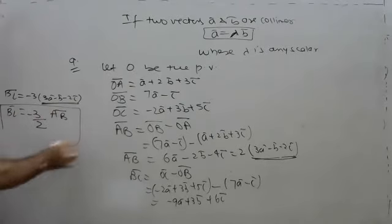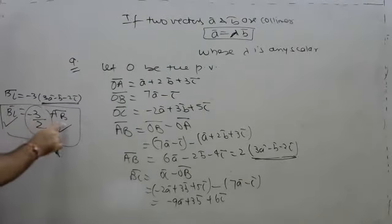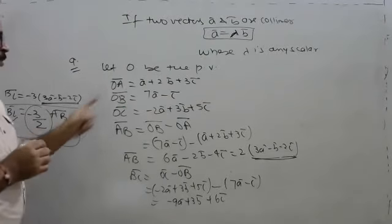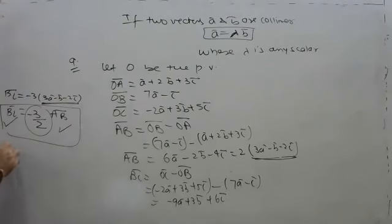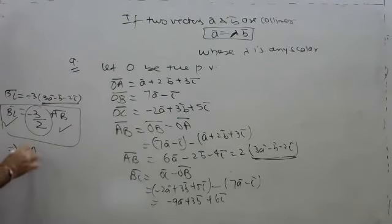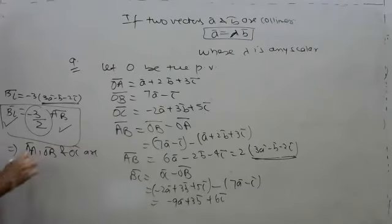When the two vectors are the same type — that is, when vector AB is proportional to vector BC — then points O, A, B and C are collinear.